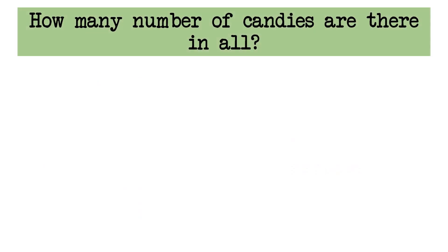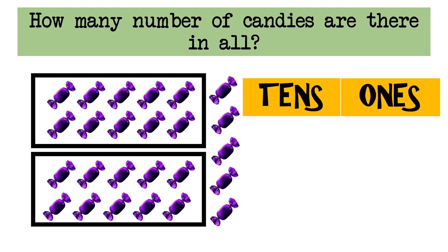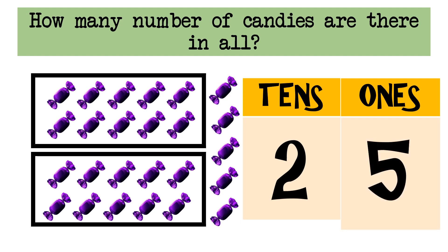How many number of candies are there in all? The correct answer is two tens and five ones. Therefore, there are twenty-five candies in all. Good job!